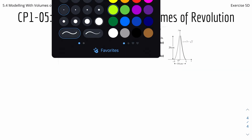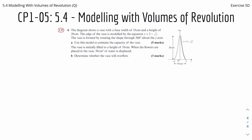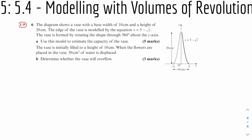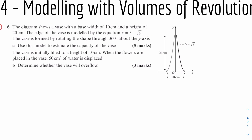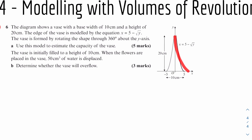For the final question, the diagram shows a vase with a base width of 10 cm and a height of 20 cm. The edge of the vase is modeled by the equation x equals 5 minus root y. The vase is formed by rotating the shape through 360 degrees about the y-axis. Part A: use this model to estimate the capacity of the vase, finding the volume from y equals 0 to y equals 20.